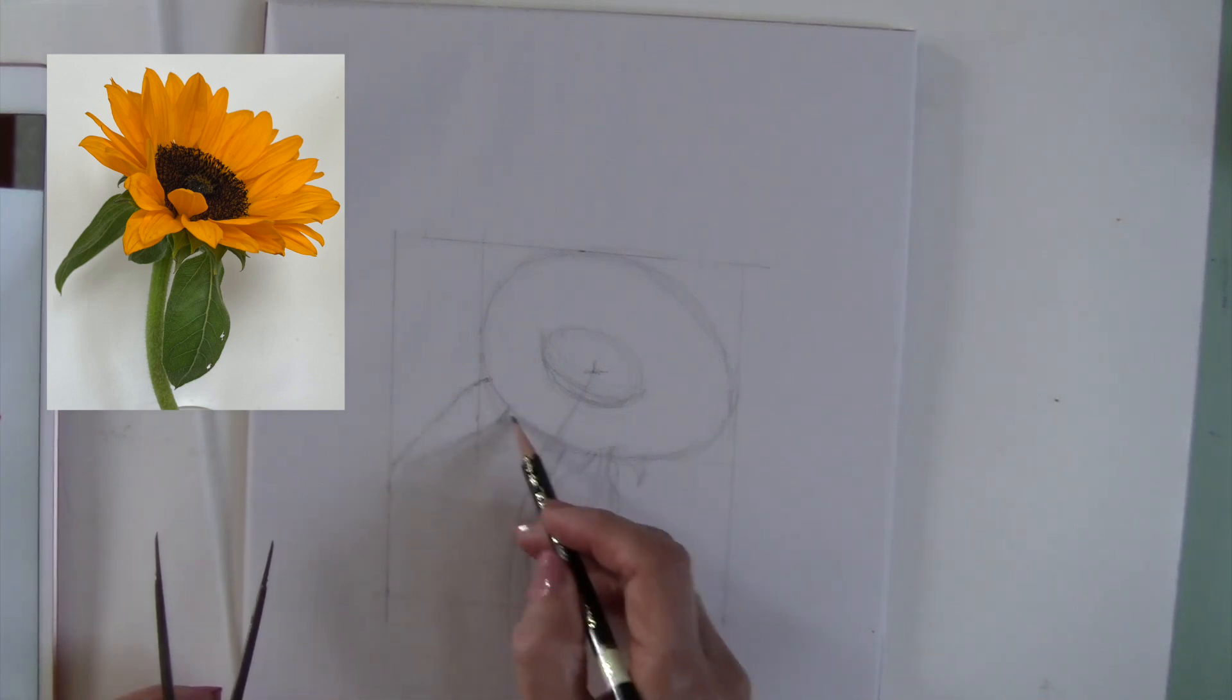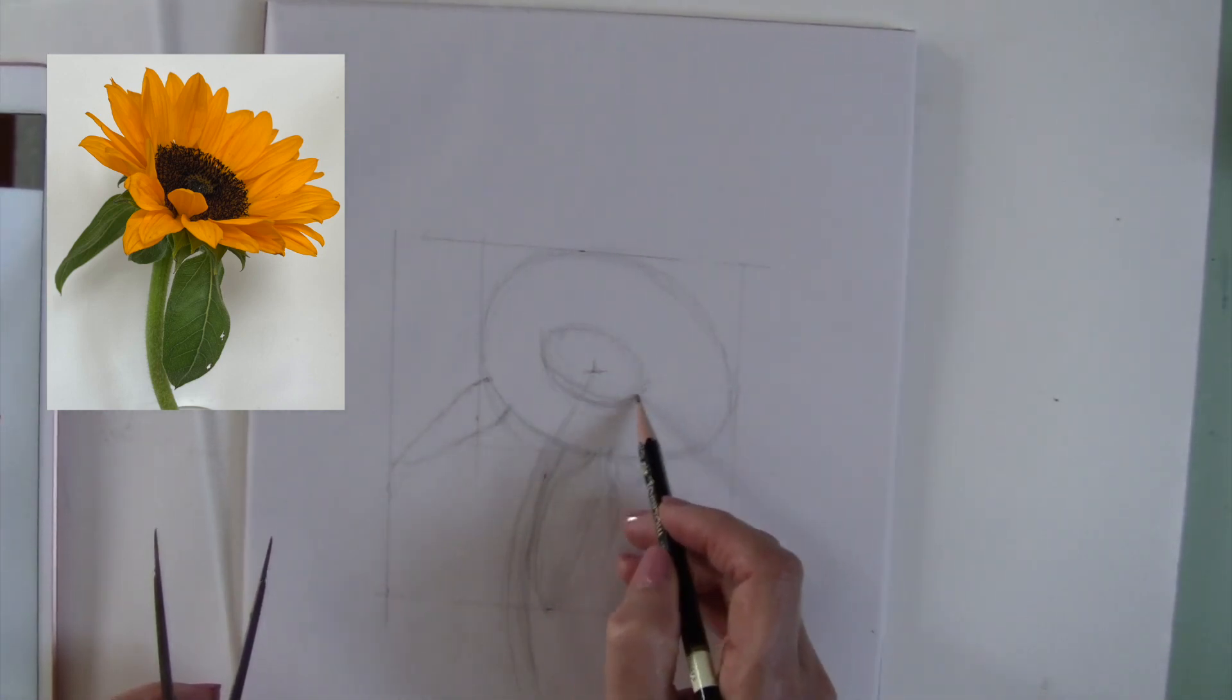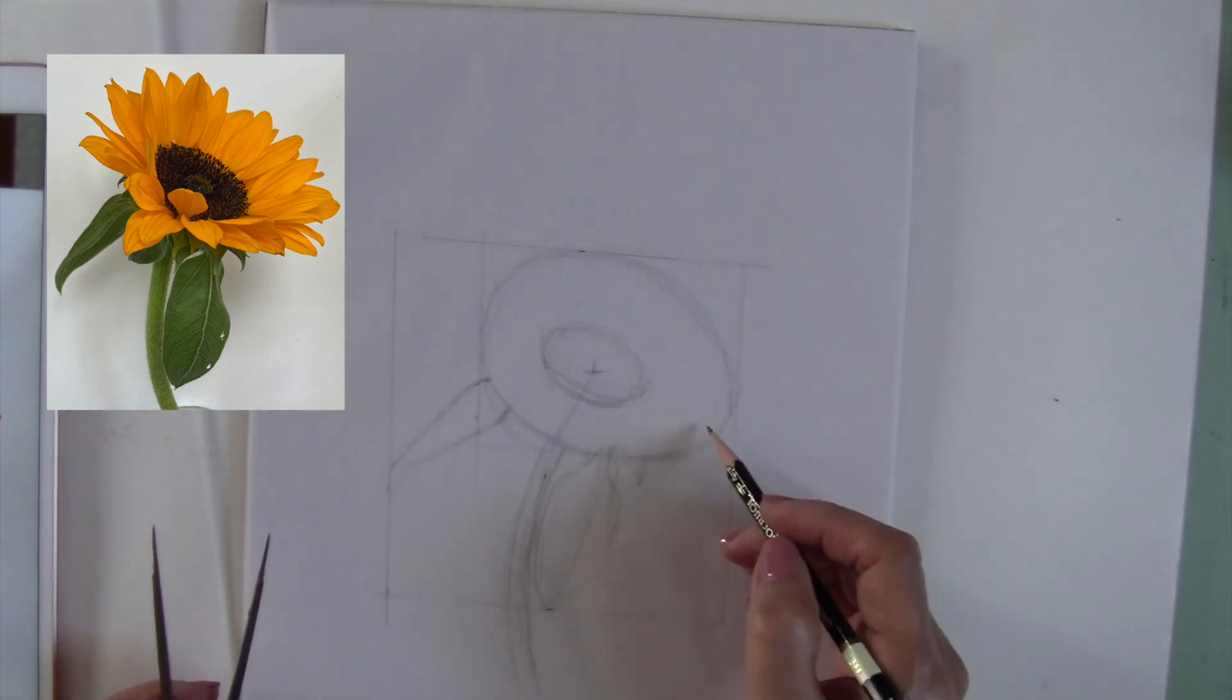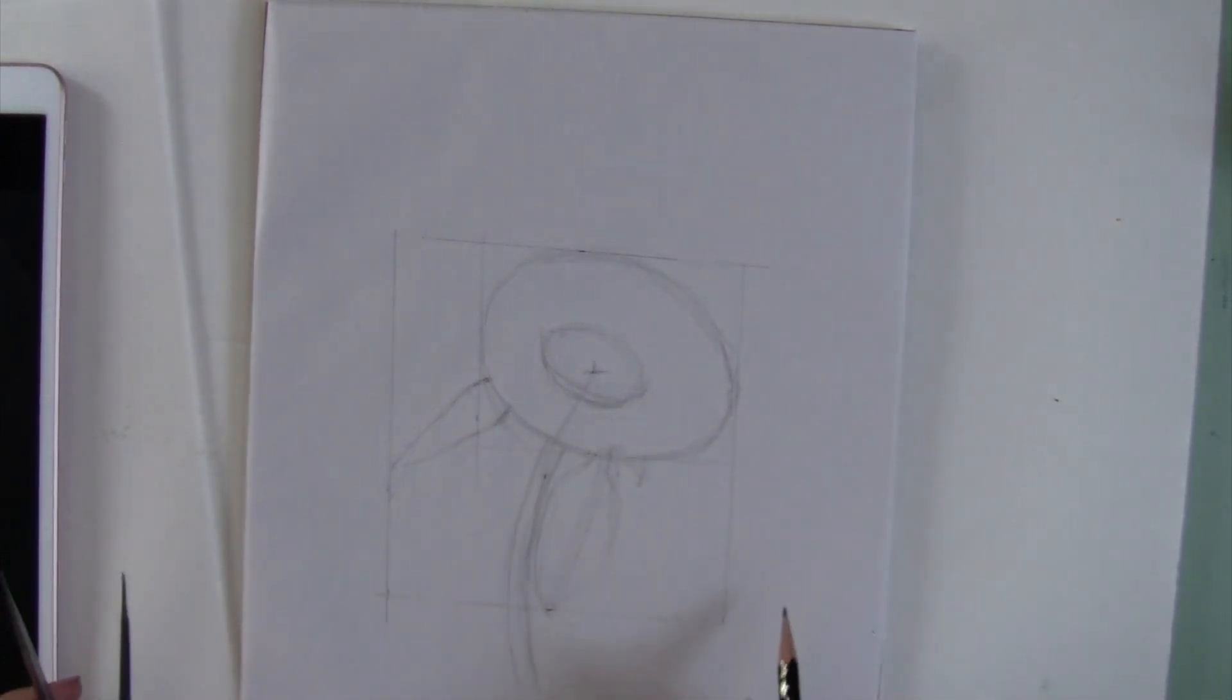So what I'm going to do now is start putting in some details. But I am not going to put it on this shape. I am going to put it on another tracing overlay. So I'll take this out of here and lay it underneath.